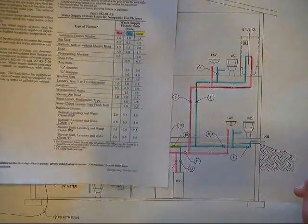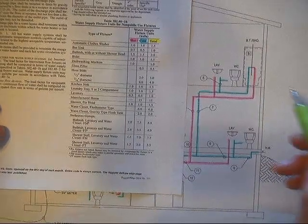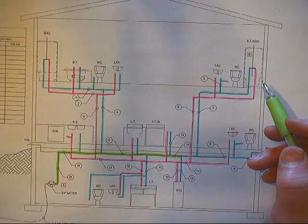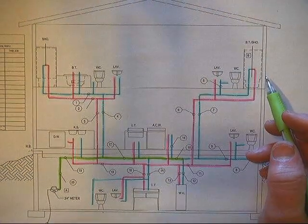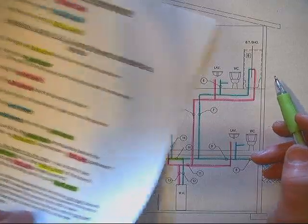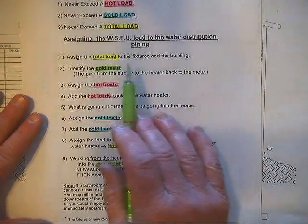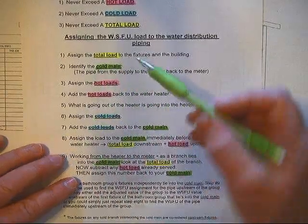For this activity we are going to assign the total loads to the plumbing fixtures that we have on this project. We are simply going to go through and write them down, and after we have written them all down we add them up and we will then assign the total load to the building.